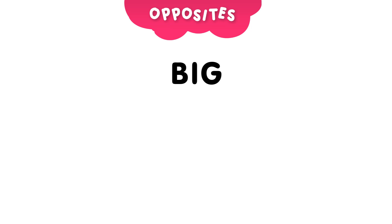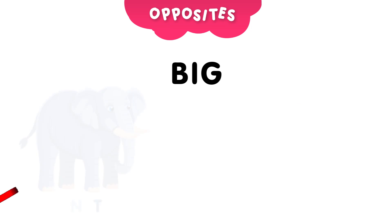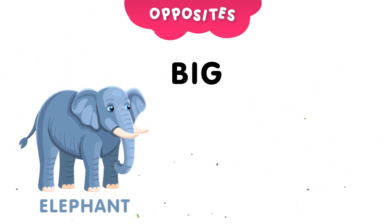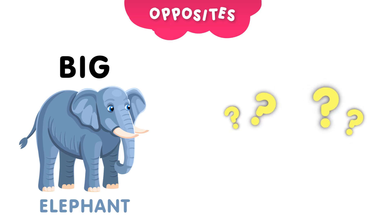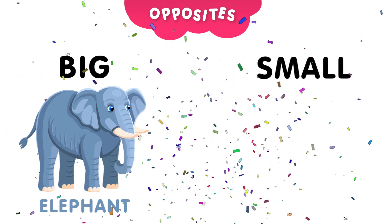Let's start with the word big. Can you guess which animal is big? And the answer is, the elephant. Now, can you guess the opposite of big? Take 5 seconds to think about it. And the answer is, small.